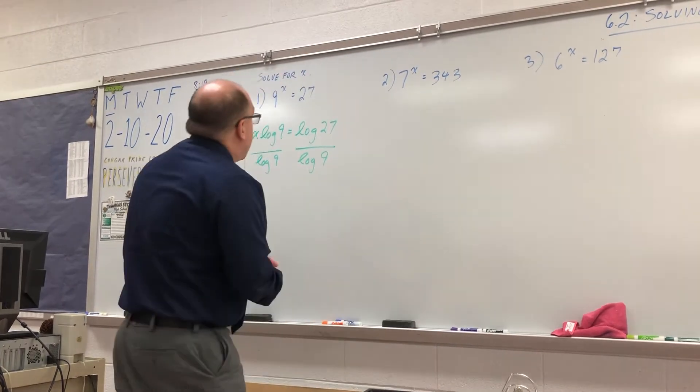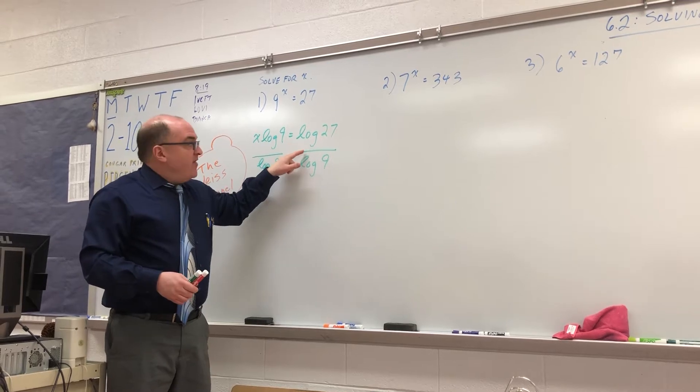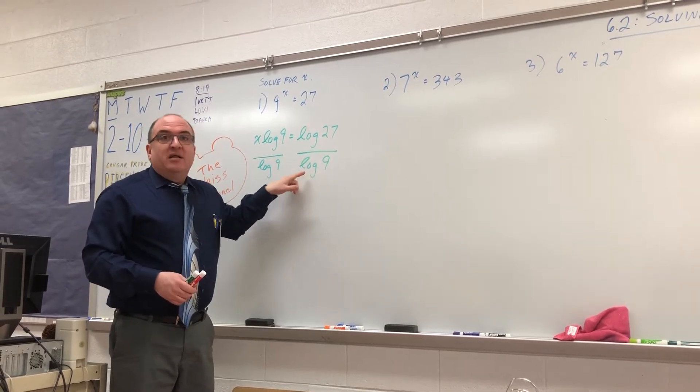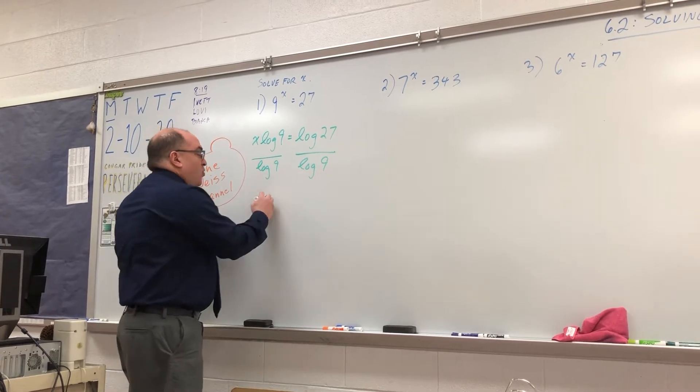On your cell phone calculator, you will hit 27, and then log, and divide by 9, log, and hit equals. You should get 1.5.